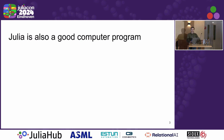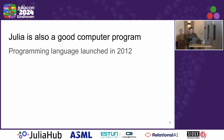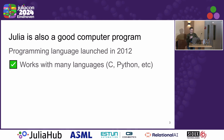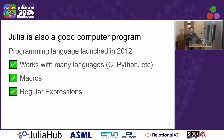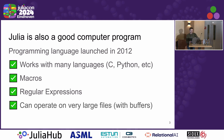I also think that Julia is a great computer program, hence being at JuliaCon. It has a lot of very nice features that I think merit investigation for people who use Vim. It was launched in 2012. It works with many programming languages, including C and Python. It has macros, it has regular expressions, and it can operate on very large files with buffers. So on first look, for a Vim user, it's kind of got a lot of features in common with Vim.